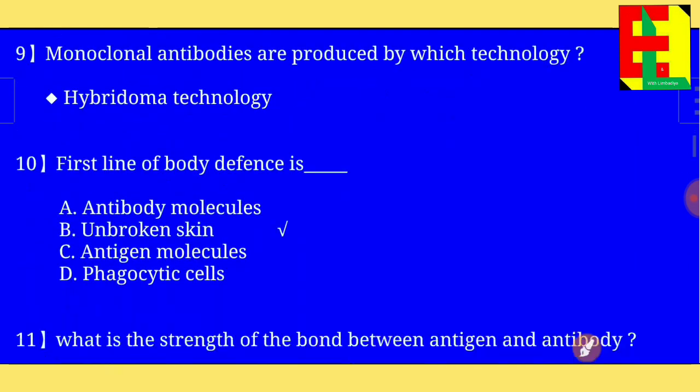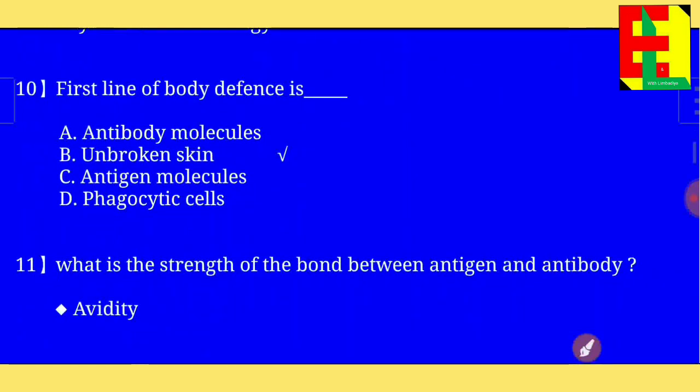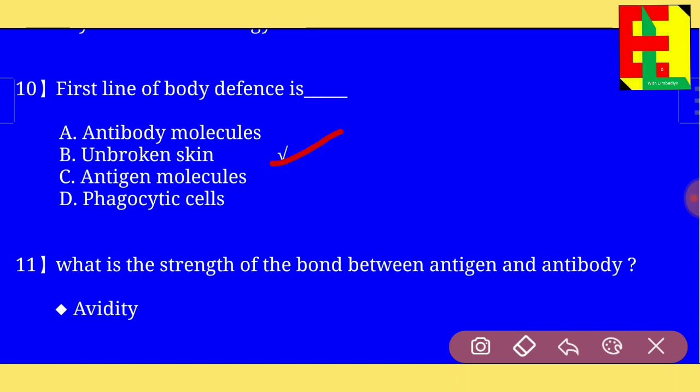Question number ten: first line of body defense is blank. From the four options, answer B is the right answer — the first line of body defense is unbroken skin.